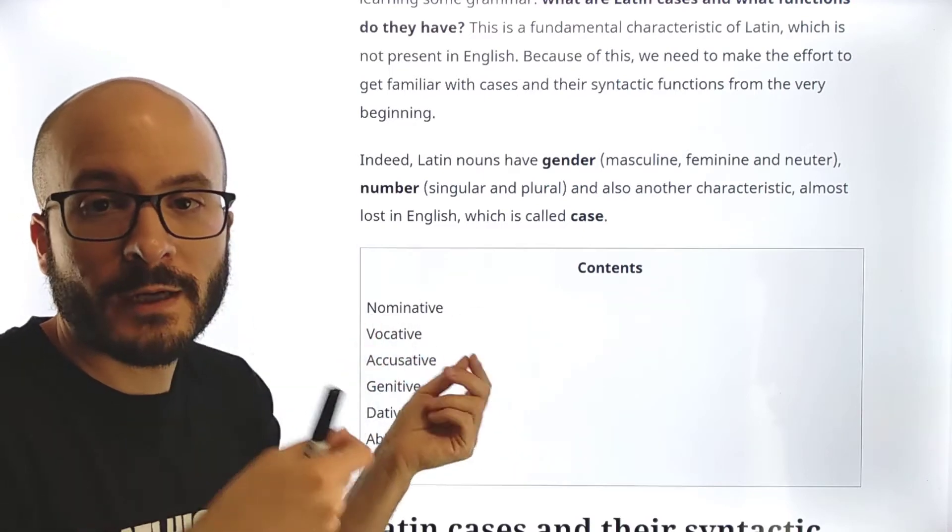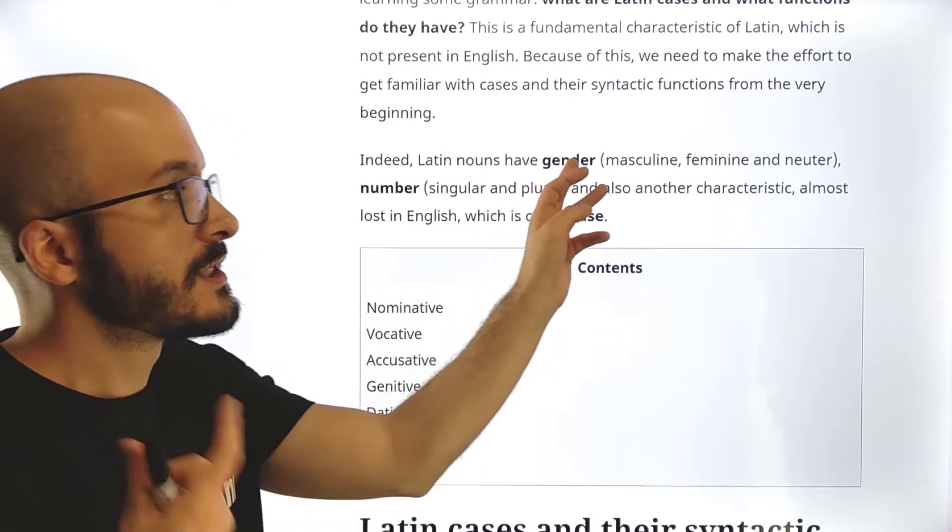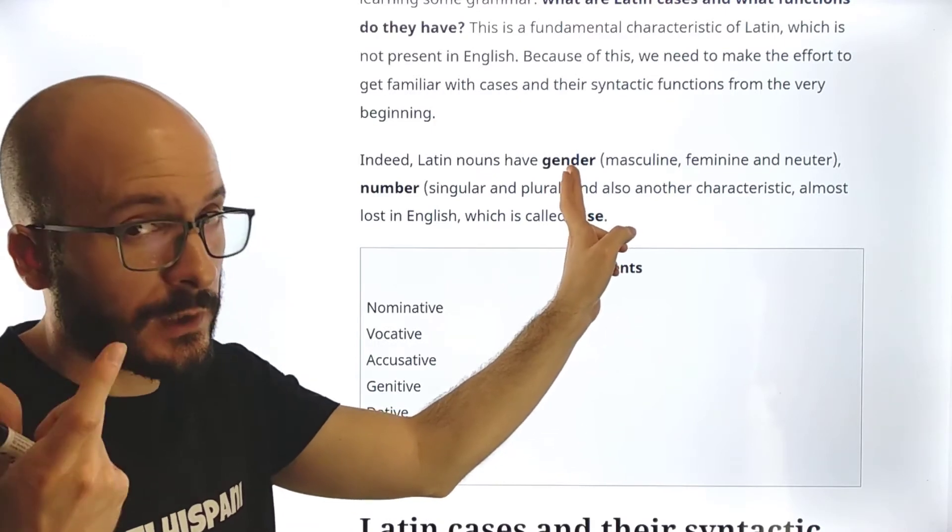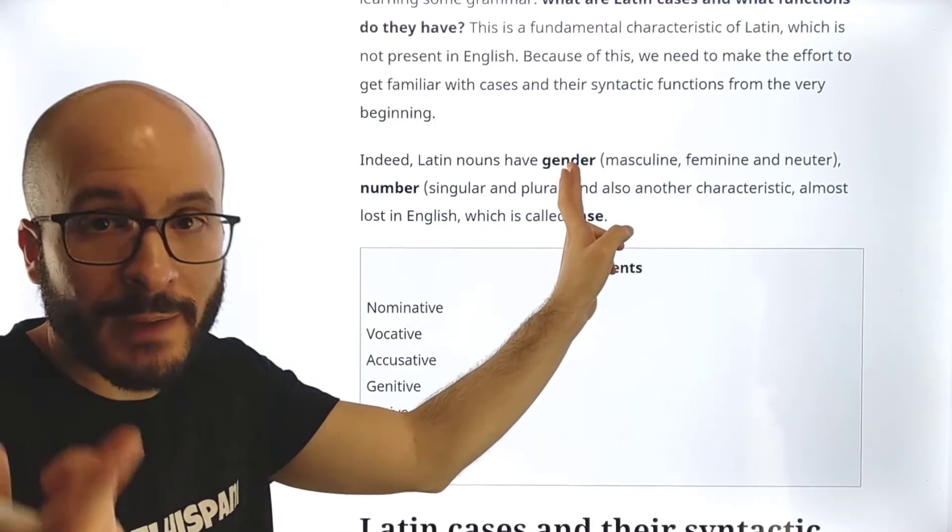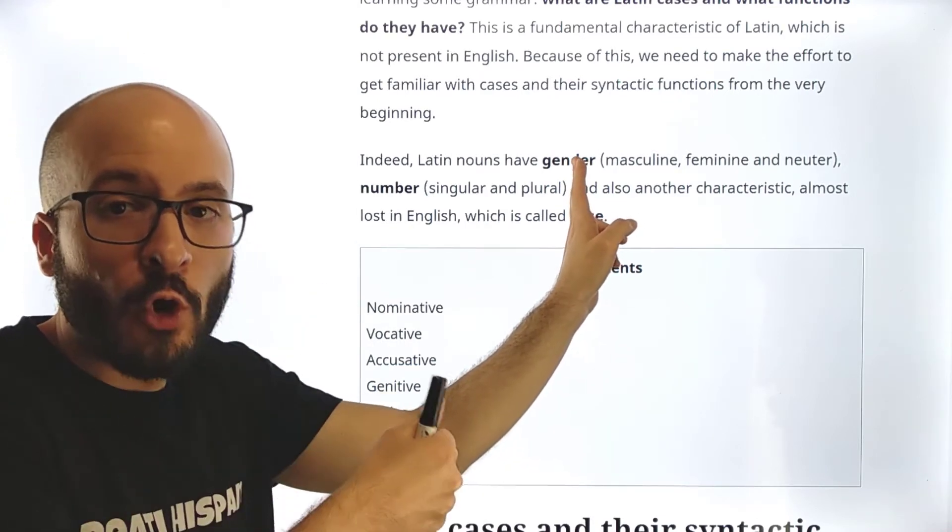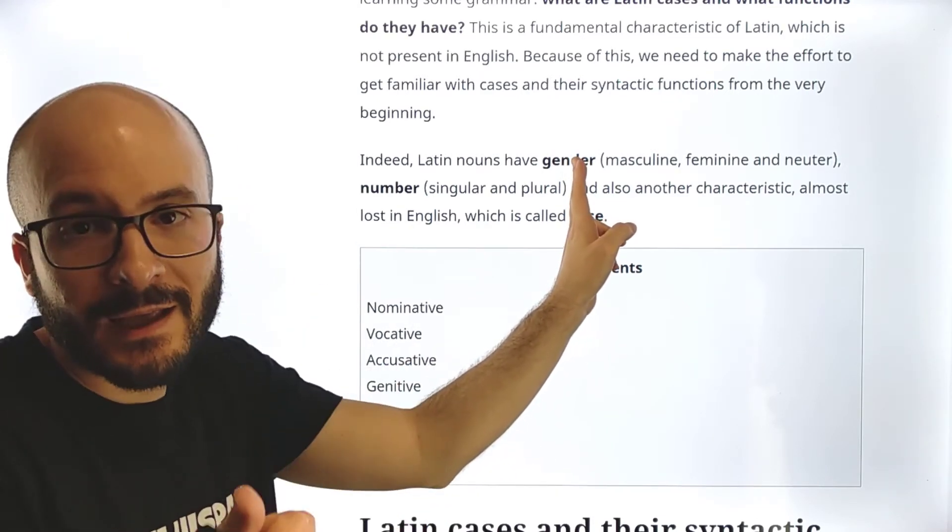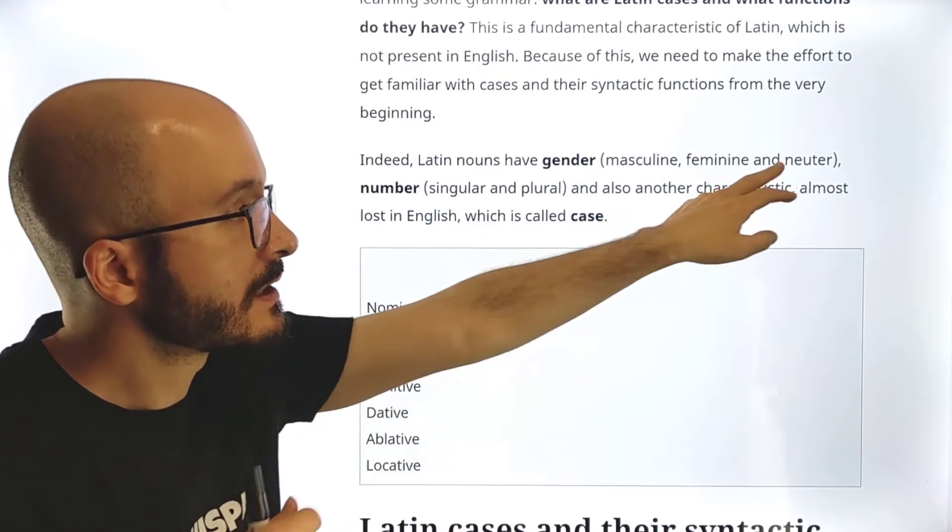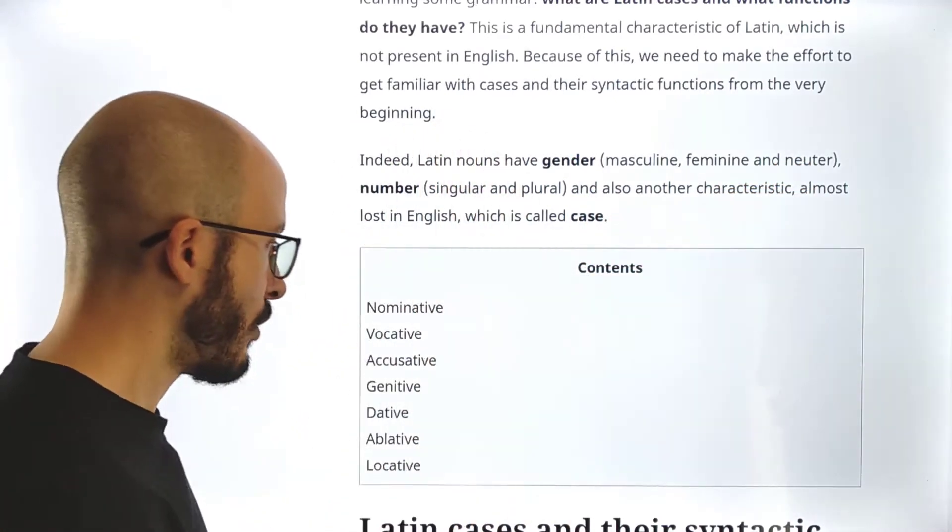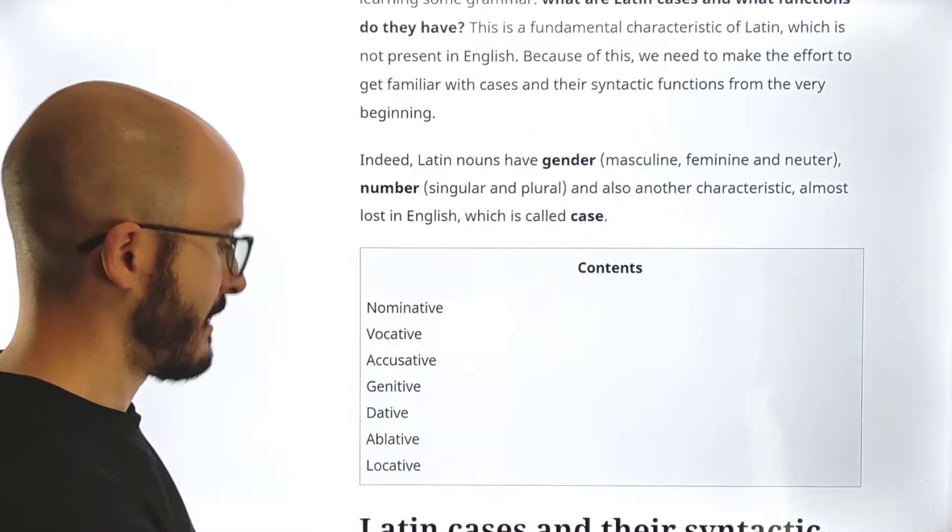We know that nouns have a number, singular, plural. So for example, in English, woman, women. Then gender. English words, English nouns don't actually have gender, but if you know Spanish or German or whatever, you know that, for example, amigo, that's masculine, amiga is feminine. And then we see that Latin also has neuter.